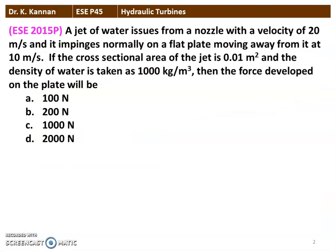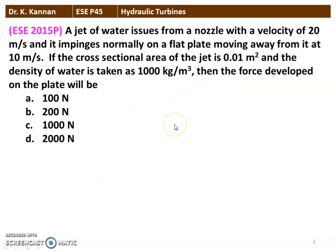The first question from the 2015 question paper: a jet of water issues from a nozzle with a velocity of 20 meters per second and it impinges normally on a flat plate moving away from it at 10 meters per second. If the cross-sectional area of the jet is 0.01 square meters and the density of water is 1000 kg/m³, then the force developed on the plate will be — we have four options here.